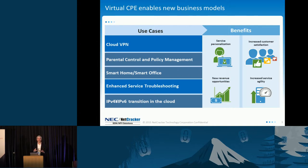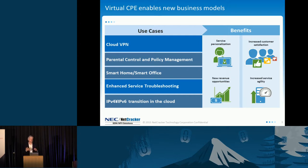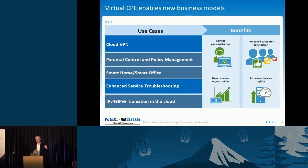Even more important is the ability to use that self-service portal to enable new applications. If we have network functions like session border control, firewall, intrusion detection, all different kinds of security functions, application acceleration, and WAN optimization — being able to turn those on in real-time creates a revenue stream for our customers. This is also behind what's driving the demand for particular use cases in vCPE like cloud VPN.